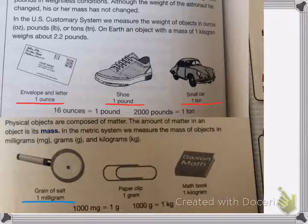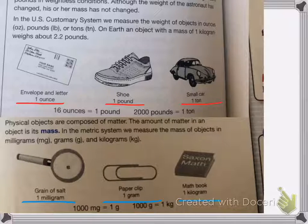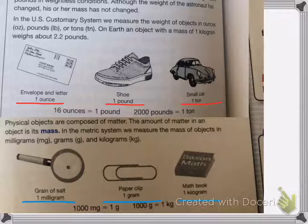A grain of salt is one milligram, a paper clip is one gram, and a math book is one kilogram. Now on Earth, mass and weight are the same, but on any other planet, it is not.